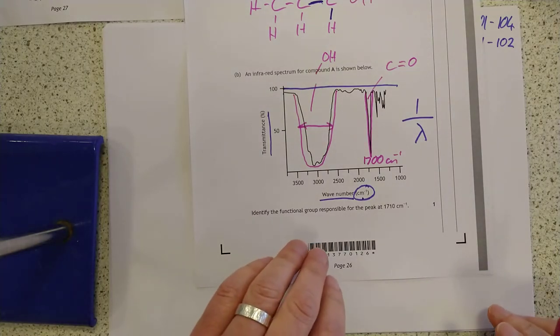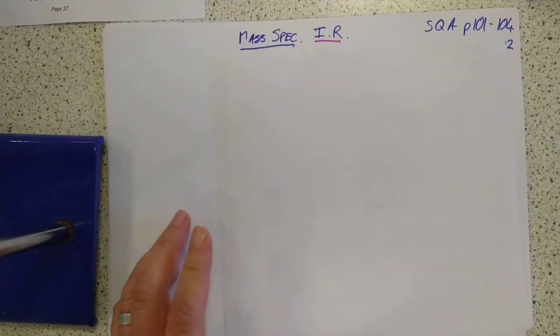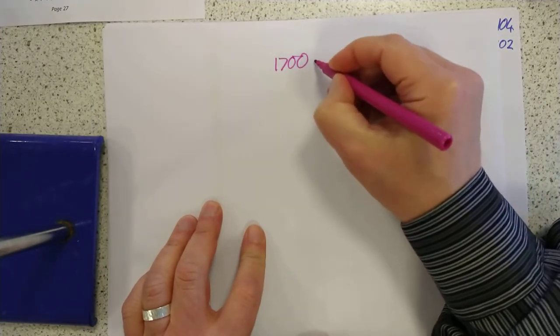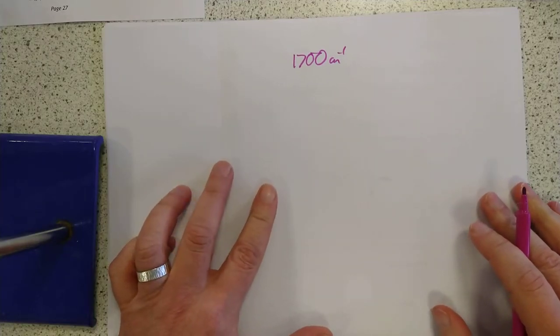The last thing I'll do is have a look at calculation of wave numbers and wavelengths on the other side of this. So if we had, for example, if you had a wave number of 1,700 centimeters to the minus 1 and we wanted to do some maths with that,